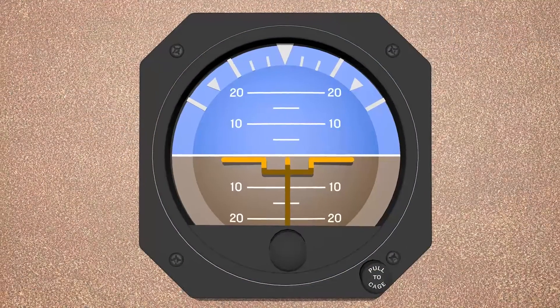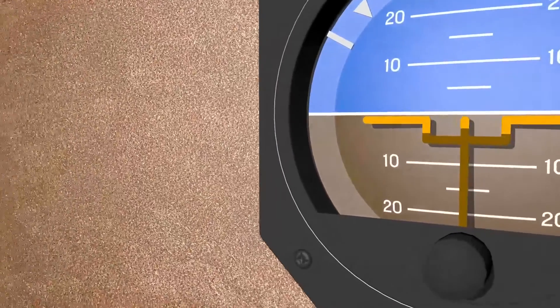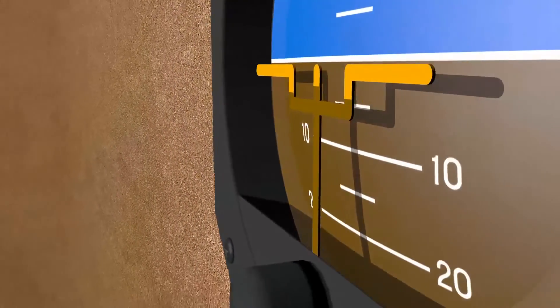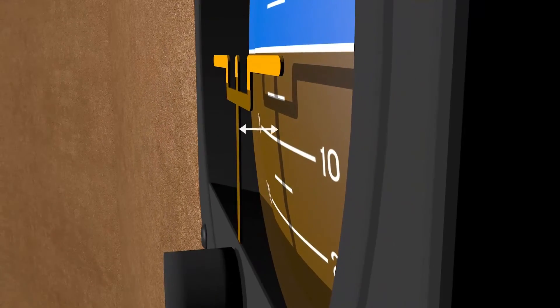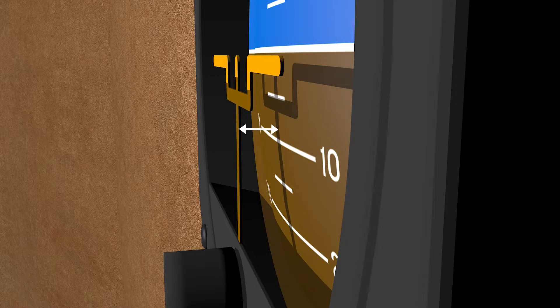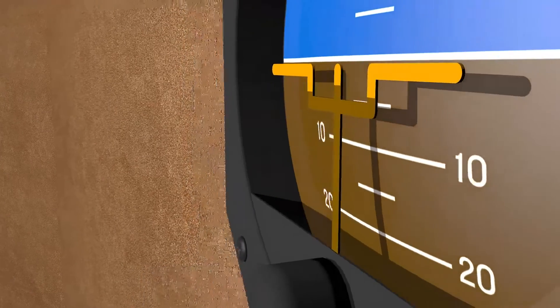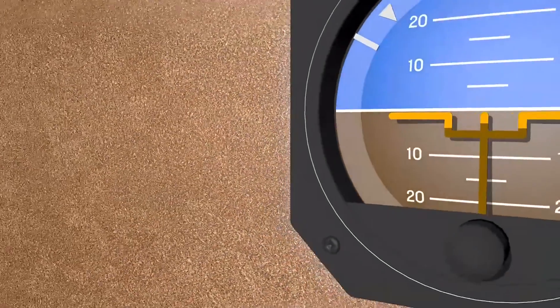On a traditional attitude indicator, the airplane symbol is a mechanically adjustable indicator that sits slightly in front of the artificial horizon. Depending on the pilot's line of sight to the instrument, the symbol may appear to not align with the horizon when in level flight.